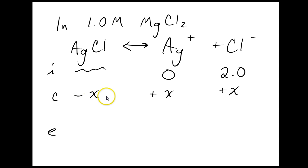I'm going to lose some solid, and as I lose the solid, as it dissolves, I'm going to get X moles of Ag plus and X moles of Cl minus. And that means at the end, I've got X moles of Ag and 2 plus X moles of Cl minus.